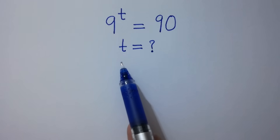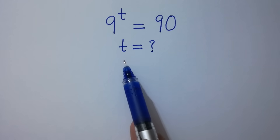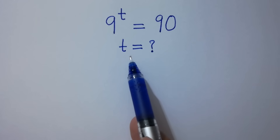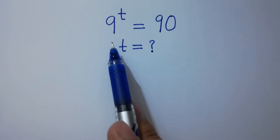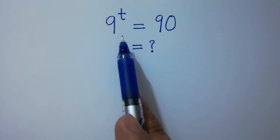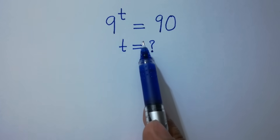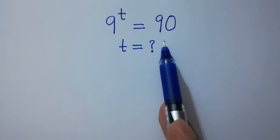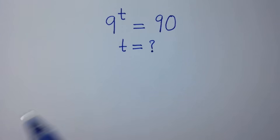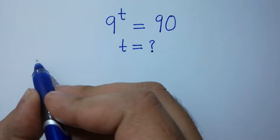Hello friends. Find the value of t if 9 to the power t equals 90. Let's have a solution.